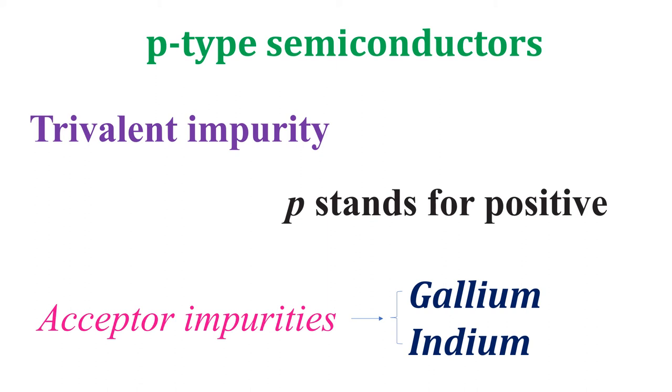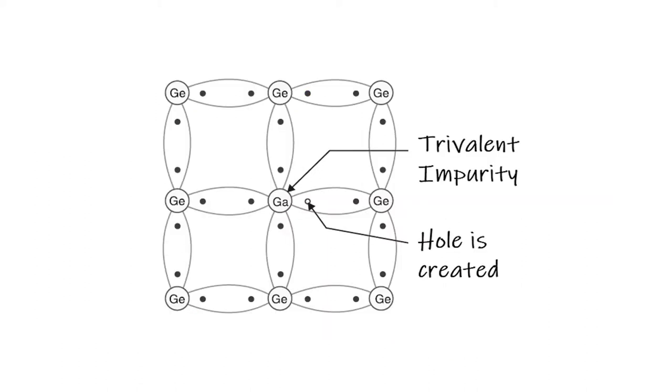Let us consider that gallium is added with germanium atom. Gallium has 3 valence electrons in its atomic structure. Each atom of gallium fits into the germanium crystal but now only 3 covalent bonds can be formed.